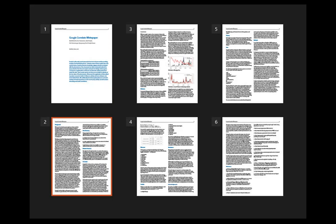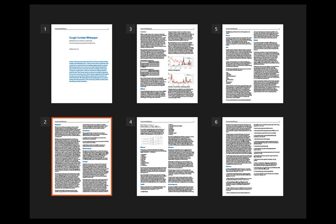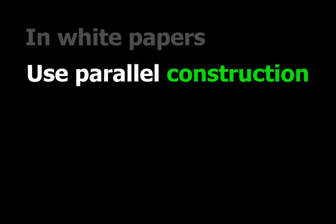As regards the length of the executive summary, one or two pages is fine — it should be enough for them to make a decision. If it's a very long document, consider making the executive summary around five to ten percent of the total. As regards the length of the white paper itself, this is a Google white paper which is only six pages. It just goes to show that they don't all need to be massive 30, 40, or 50-page documents. If you can distill it down to six, ten, or fifteen pages, the main thing is that you provide sufficient information for the reader to make a decision.